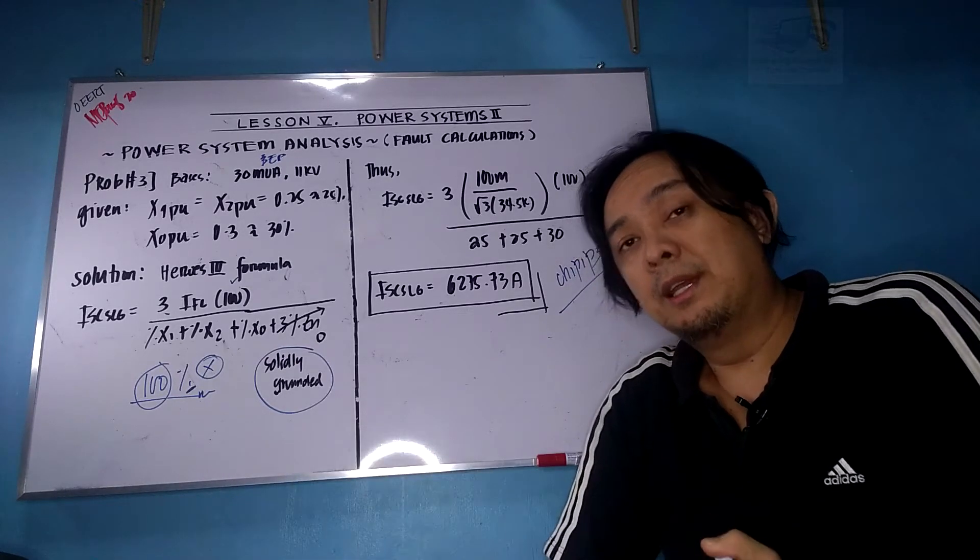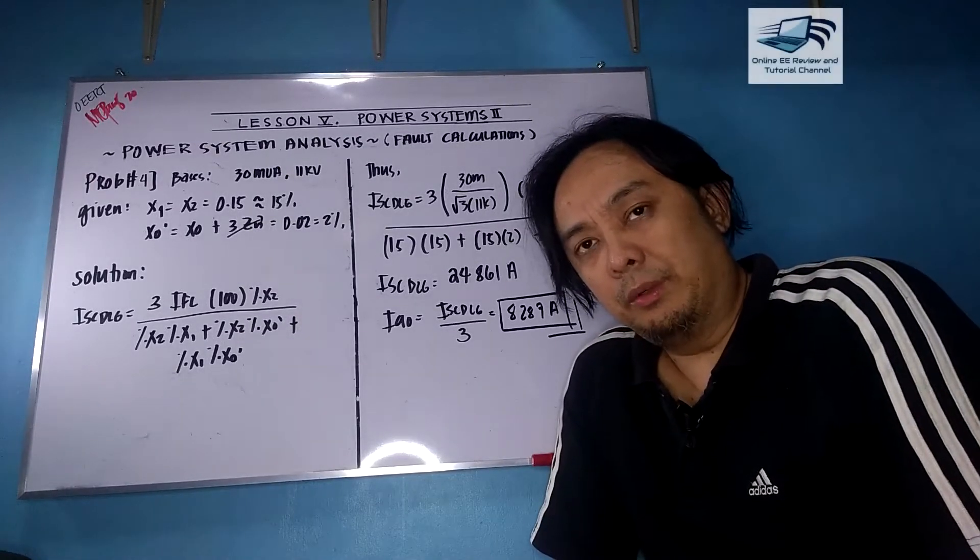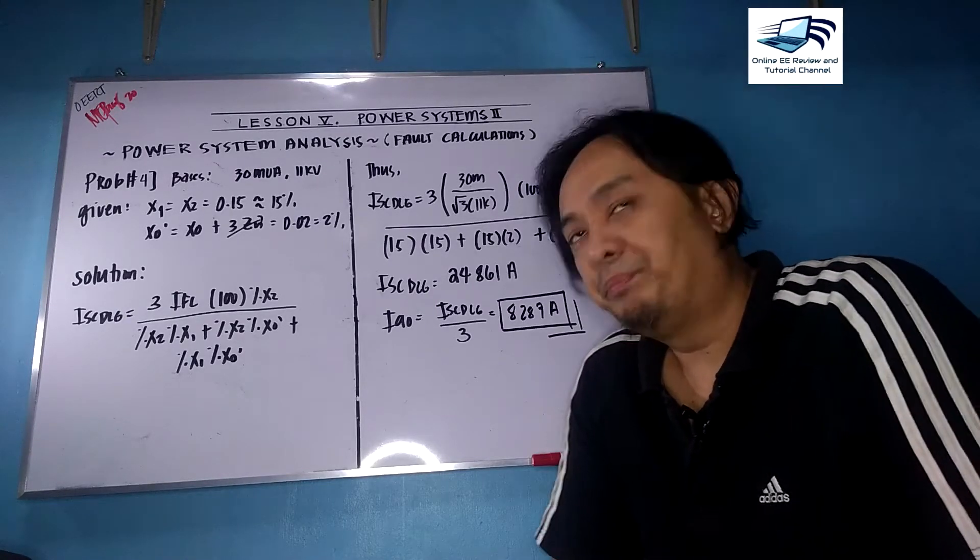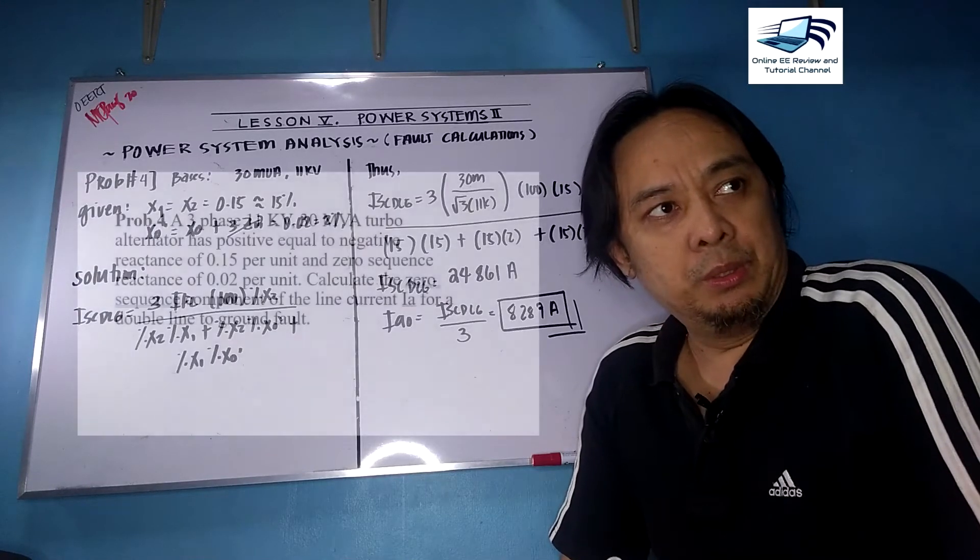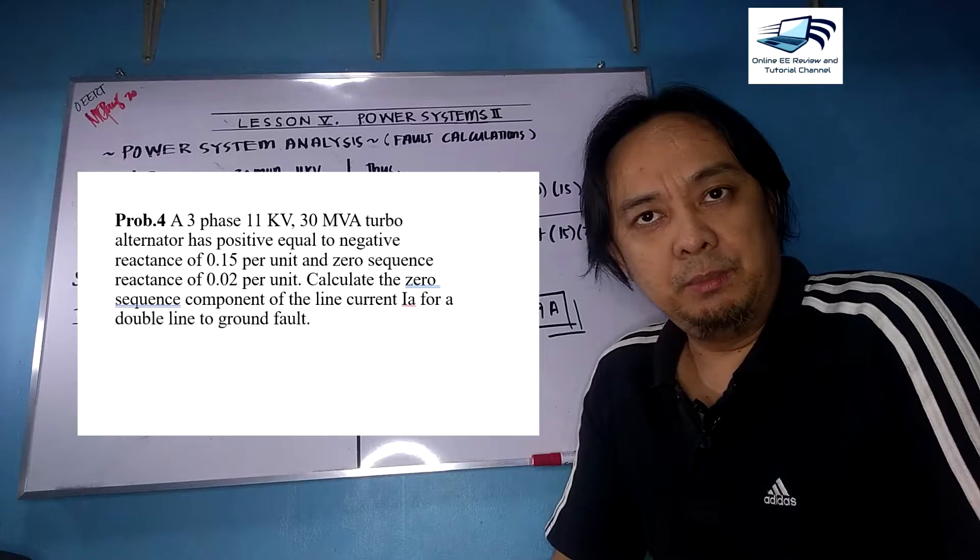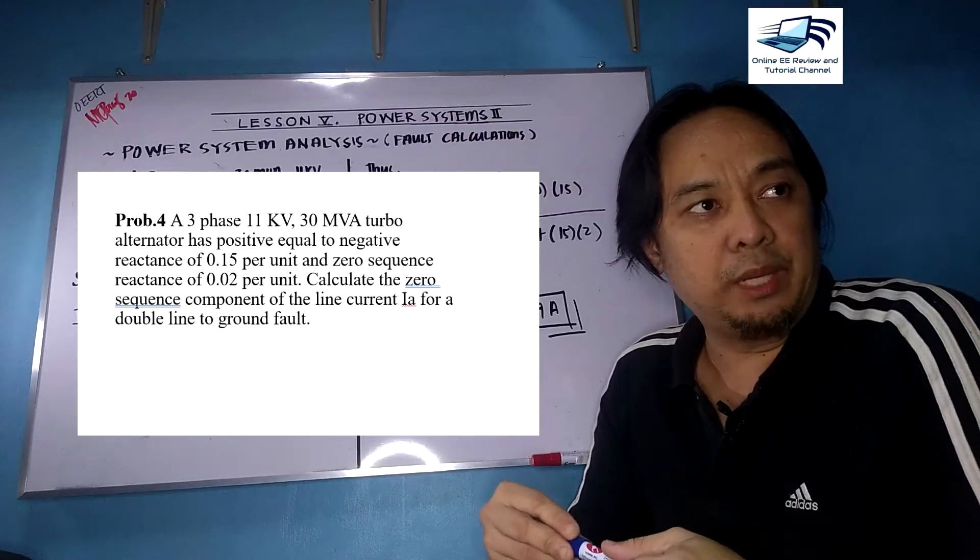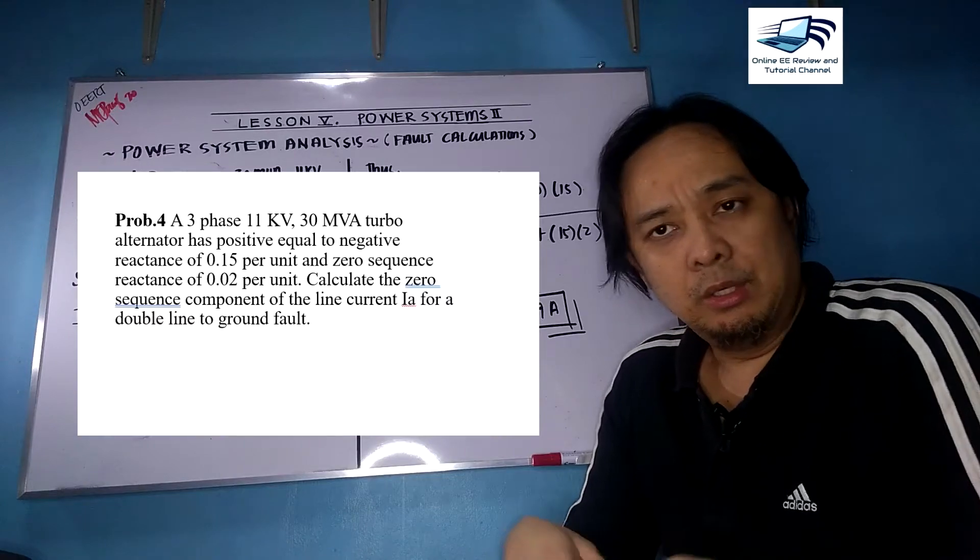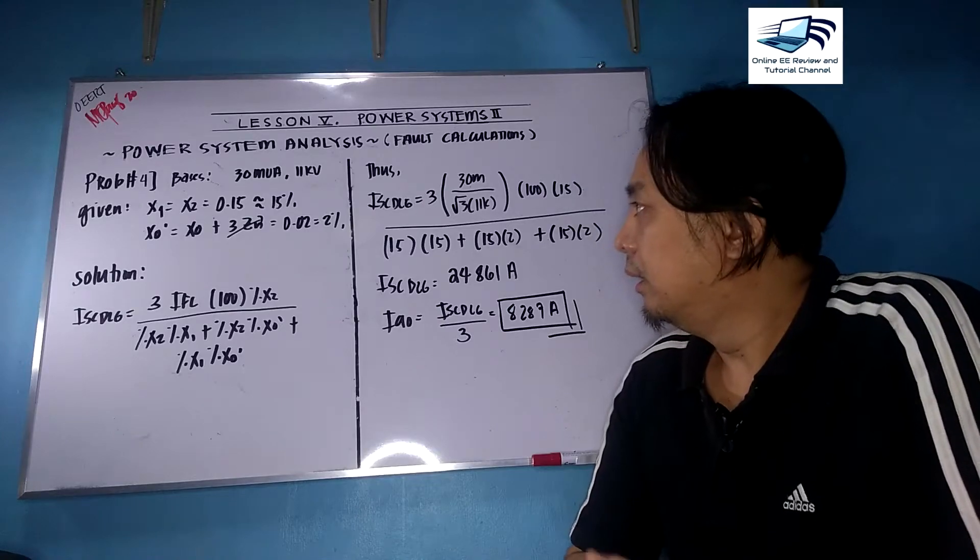Let us move forward to problem number four. Hello and good day. We are on our last problem for fault calculations under the lesson Power Systems 2. Problem number four: A three-phase, 11 kV, 30 MVA turbo alternator has a positive equal to the negative reactance of 0.15 per unit and a zero reactance of 0.2 per unit. Calculate the zero sequence component of the line current IA for a double line to ground fault.